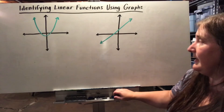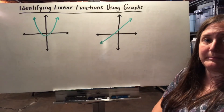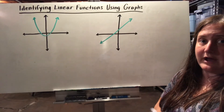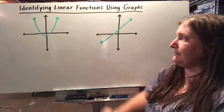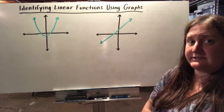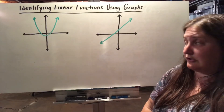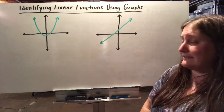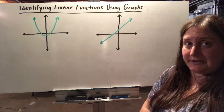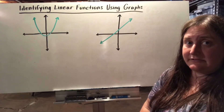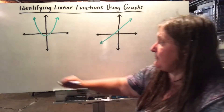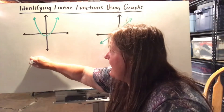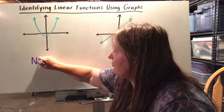Let's identify some linear functions by looking at their graphs. When I look at this graph, I notice it is a function, but it has a curve to it — not a constant rate of change. So this would represent a non-linear function.